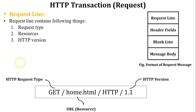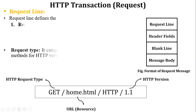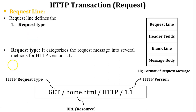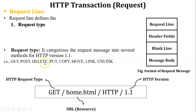The first component of the request line is the request type, which categorizes the request message into several methods. For HTTP version 1.1, the methods include GET, POST, DELETE, PUT, COPY, MOVE, LINK, and UNLINK. There are a number of methods available in the full request type. In the simple request, GET, POST, and HEAD methods are used.